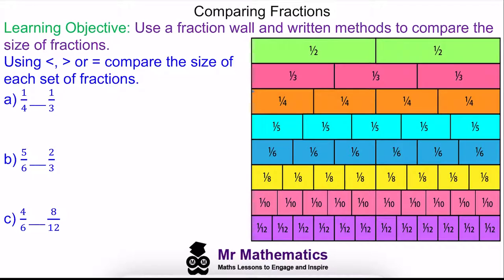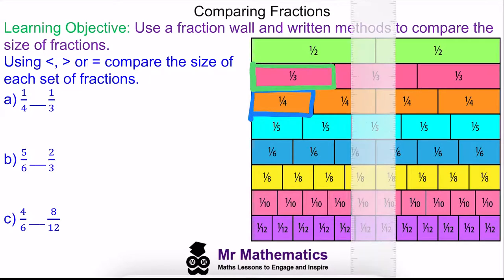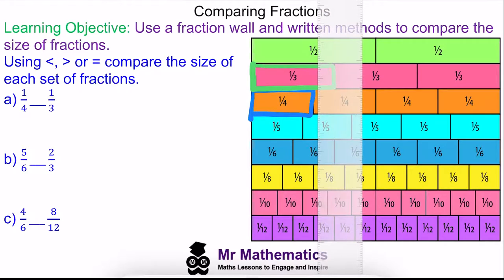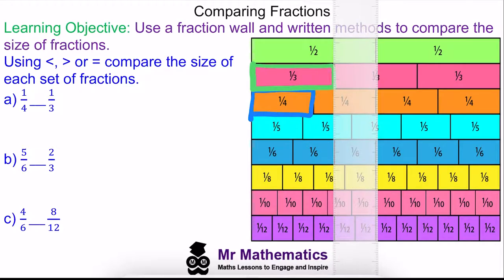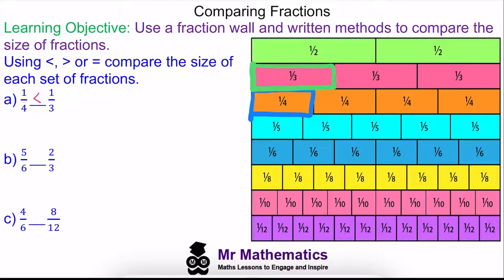We'll begin by showing one quarter on our fraction wall in blue, compared to one third shown in green. You can see that one quarter is less than one third. Using the written method, the common denominator is 12: we multiply one quarter by three to get three twelfths, and one third by four to get four twelfths. You can see three twelfths is the smaller.